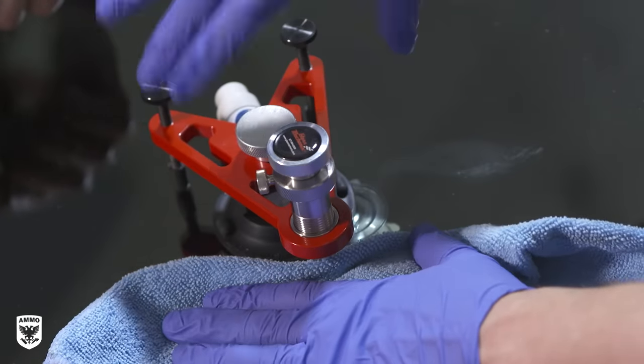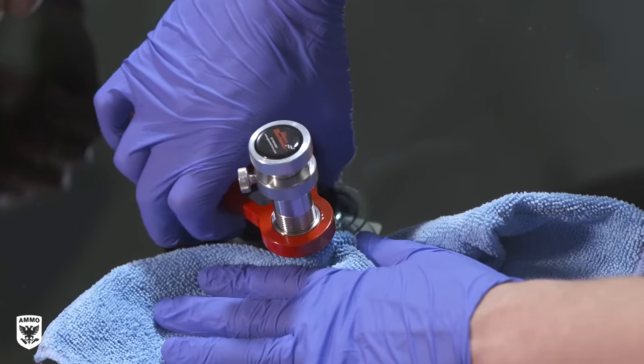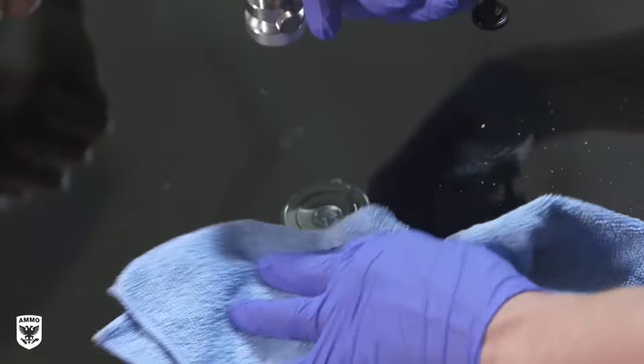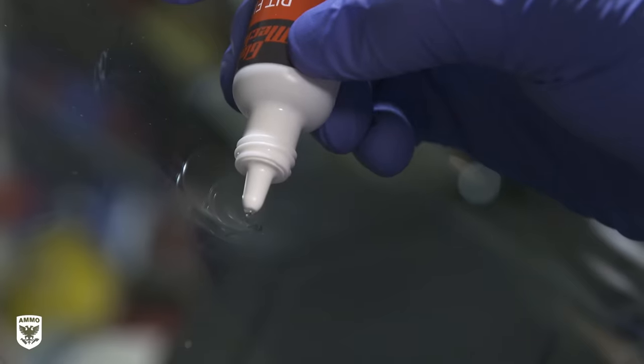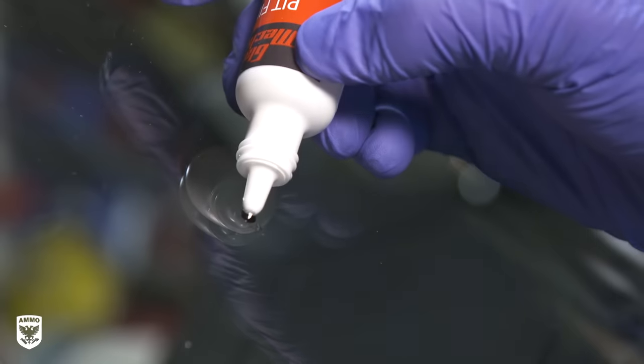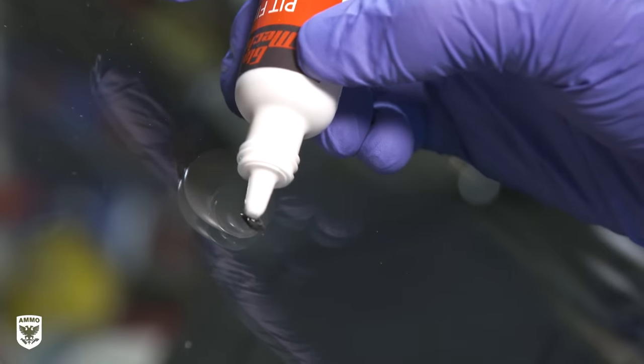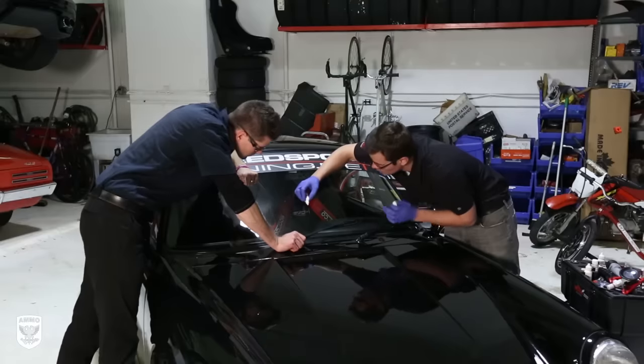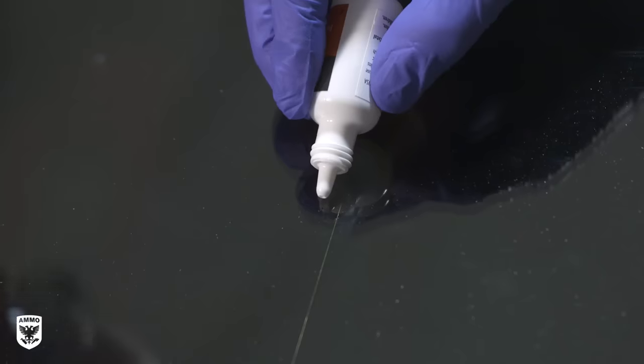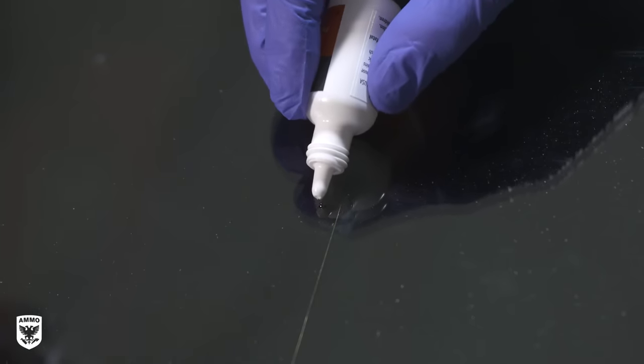Now that the air pocket is full of resin and no air, it's time to fill the actual glass chip so it's smooth with no divot. For this, a thicker resin is used called pit filler. This particular resin hardens as strong and clear as the original glass.